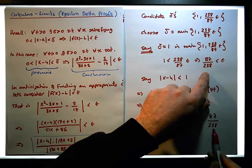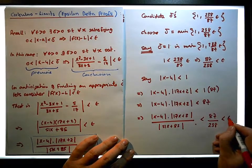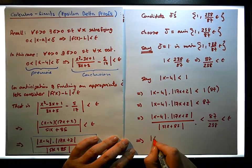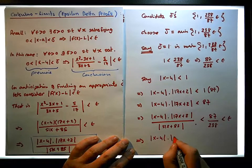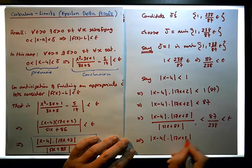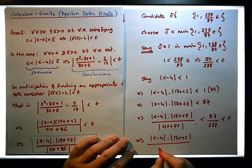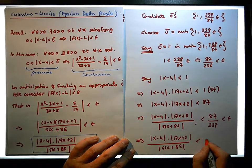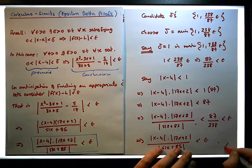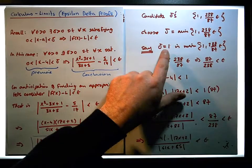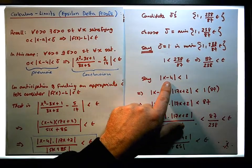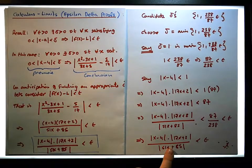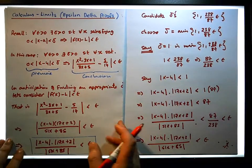So this is less than epsilon. By transitivity, this implies that the absolute value of x minus 4 times the absolute value of 17x plus 2, all over the absolute value of 51x plus 85, is in fact less than epsilon — which is what we wanted to show: that we can derive this fact when delta is equal to 1.